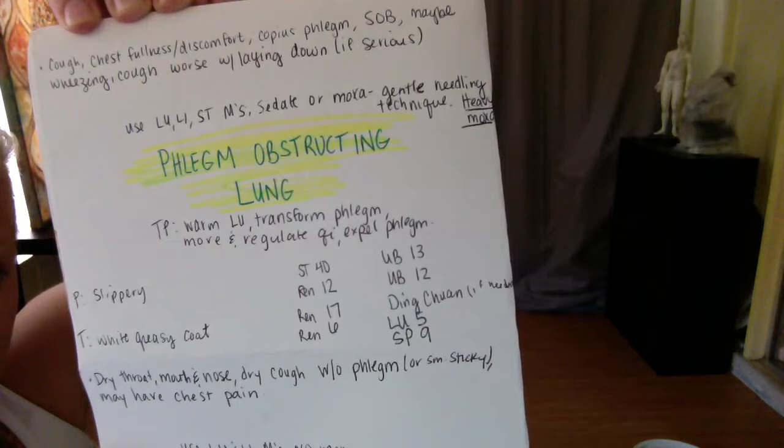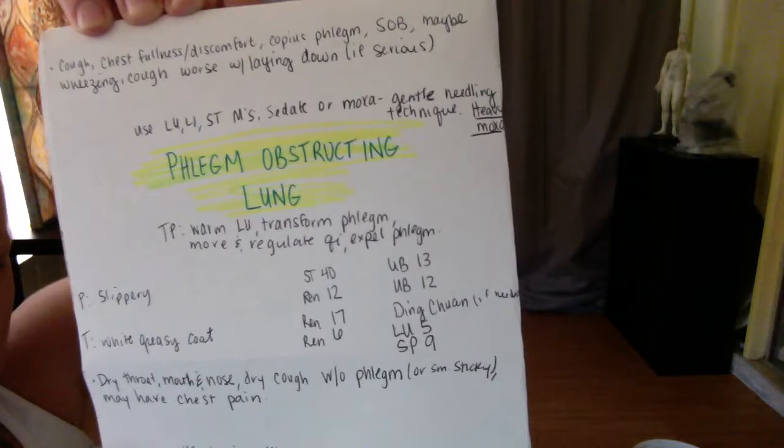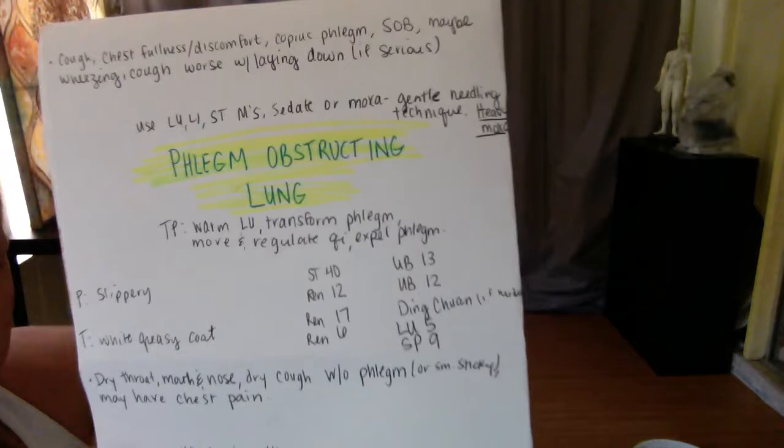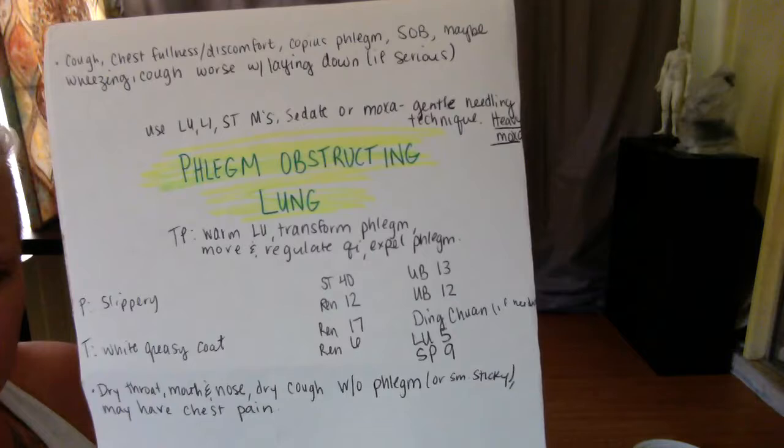Phlegm obstructing the lung: use large intestine and stomach meridians. Sedate or moxa, gentle needling technique, heavy moxa. You want to use heavy moxa to transform that phlegm.